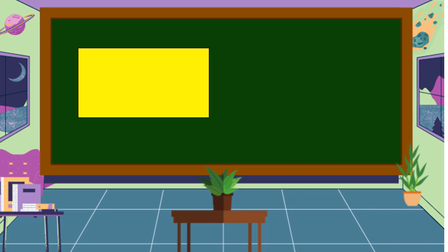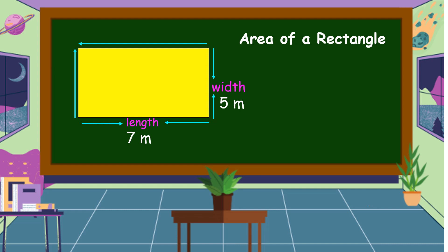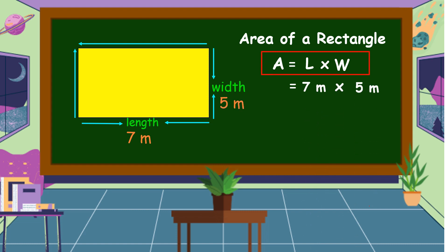Do you know what plane figure is this? This is a rectangle. The two dimensions of a rectangle are the length and the width. Suppose that the length of this rectangle is 7 meters and the width is 5 meters. The formula for finding the area of a rectangle is area equals length times width. 7 meters times 5 meters is equal to 35 meters squared. This is the area of this rectangle.